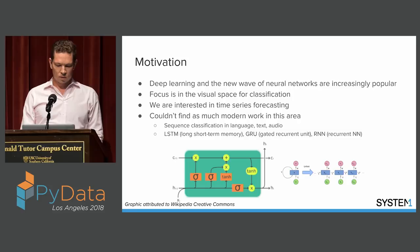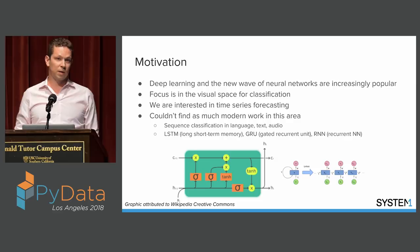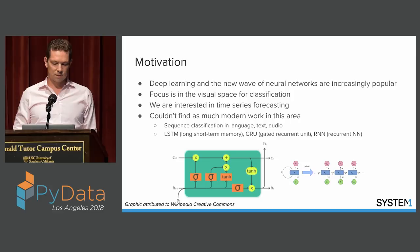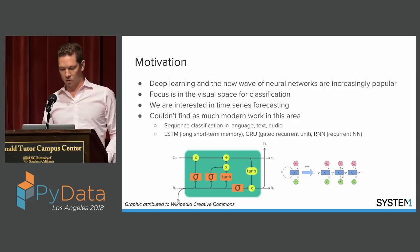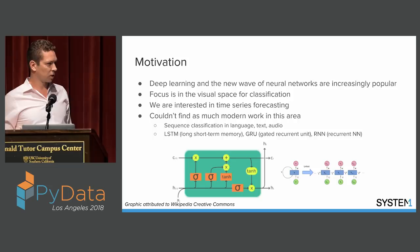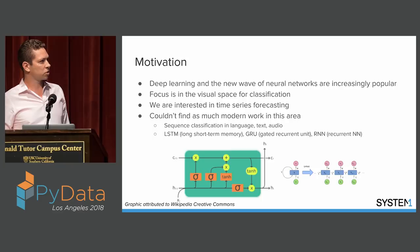Deep learning and the new wave of neural network architectures are all the rage right now. There's a lot of focus in the visual space for classification, but at System 1 we're more interested in time series modeling — specifically, how do we predict the revenue per click or cost per click for the next click or the next hour for marketing and ad tech type data. I was looking at how we could apply deep learning to our problem and came across LSTMs and recurrent neural networks — neural networks where neurons have gates, multipliers, and thresholds chained up in sequence.